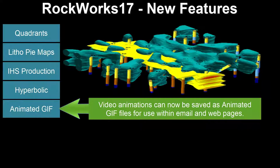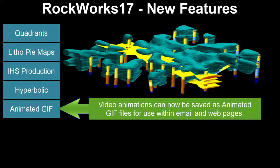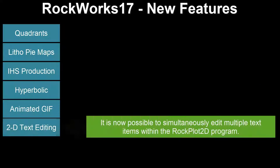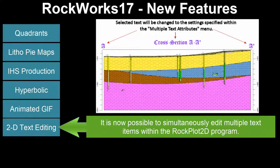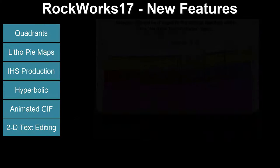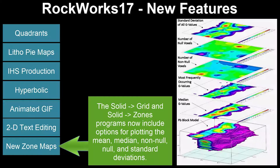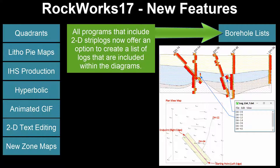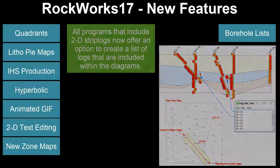Video animations can now be saved as animated GIF files for use within email and web pages. It is now possible to simultaneously edit multiple text items within the RockPlot 2D program. The Solid to Grid and Solid to Zones programs now include options for plotting the mean, median, non-null, null, and standard deviations. All programs that include 2D strip logs now offer an option to create a list of logs that are included within the diagrams.